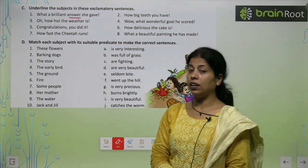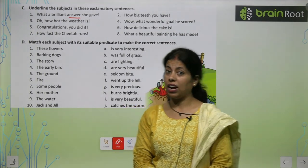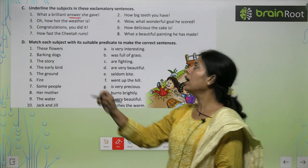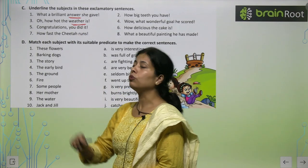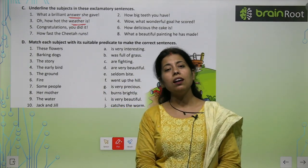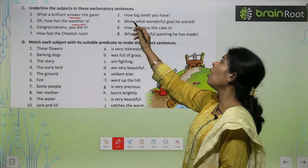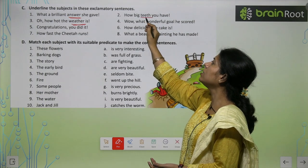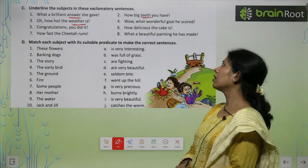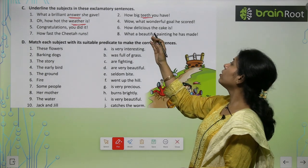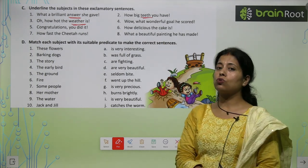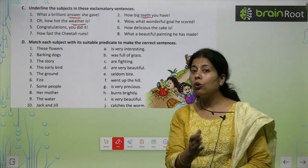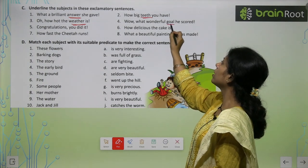How hot the weather is — kaun hot hai yahan pe? Yahan pe weather hot hai. Toh humara subject rahega weather, kyunki hum yahan pe weather ke baare mein baat kar rahe hai. How big teeth you have — so our subject is teeth, kyunki hum teeth ke baare mein baat kar rahe hai. What a wonderful goal he scored — toh kis ke baare mein baat ho rahi hai? Goal ke baare mein — toh underline karenge goal.